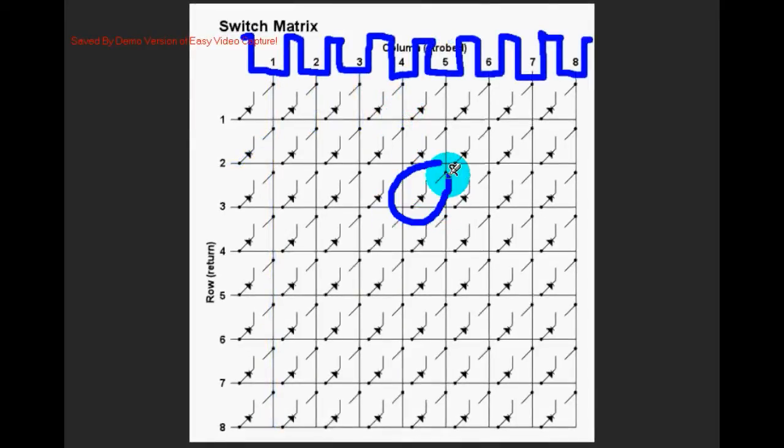The matrix contains sixty-four switches each with its own diode. These are called isolation diodes and their purpose is to allow current to flow in one direction but not in the opposite direction.